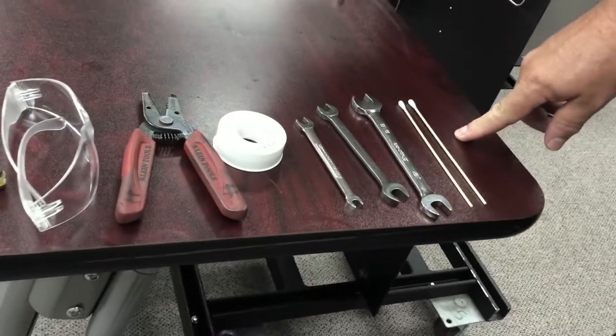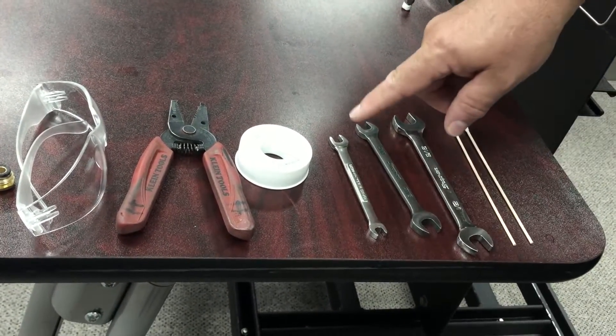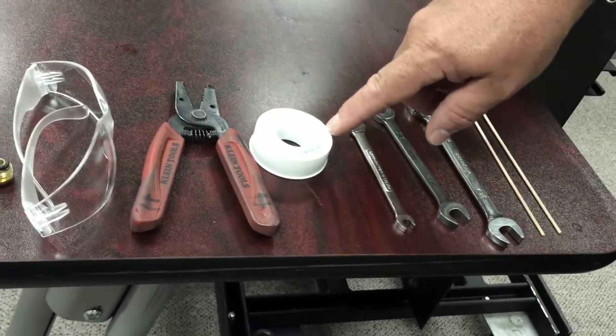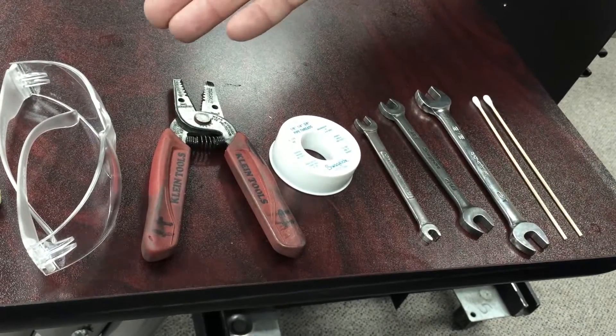You'll need several Q-tips, a 9-16 inch wrench, 7-16 inch wrench, a 5-16 inch wrench, a quarter inch wrench, some Teflon tape, a cutting device to remove the end of the lubricant, and some safety glasses.